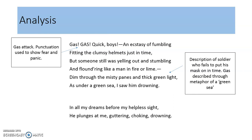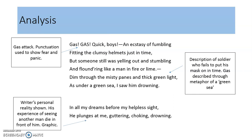'In all my dreams before my helpless sight he plunges at me, guttering, choking, drowning.' We have a personal reality and reflection from the poet — his experience of seeing another man die in front of him. These words 'guttering, choking, drowning' really paint a graphic image for us of just how horrifying that sight must have been for him.